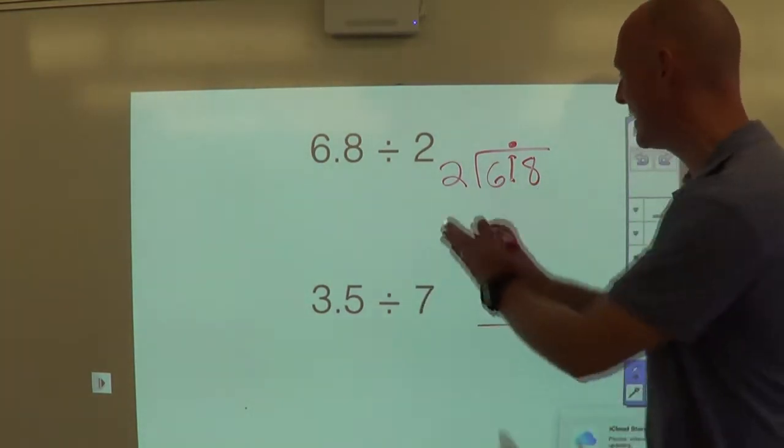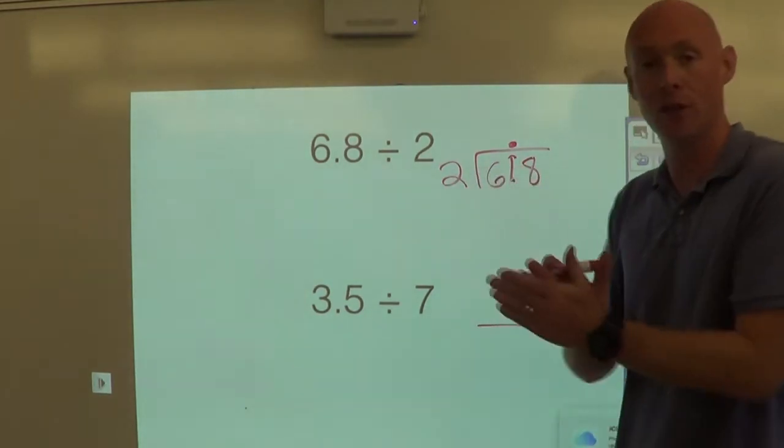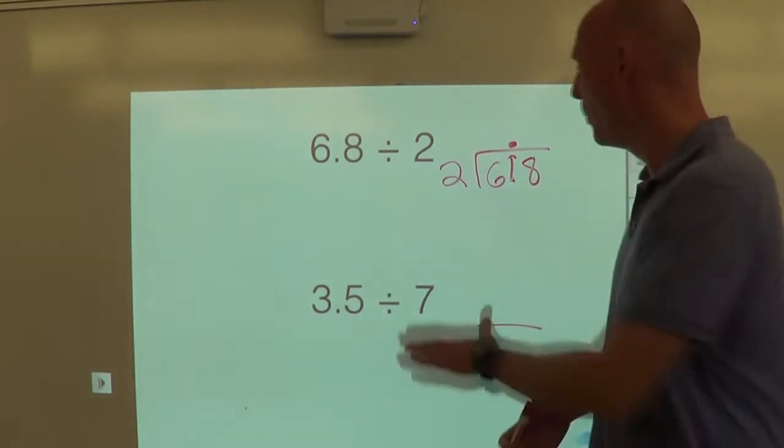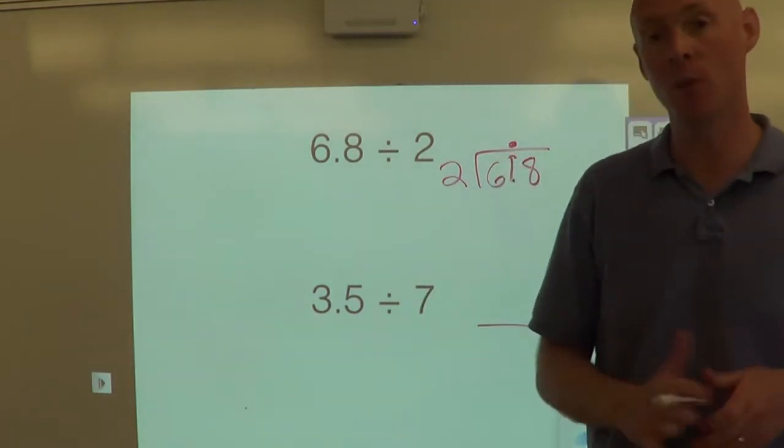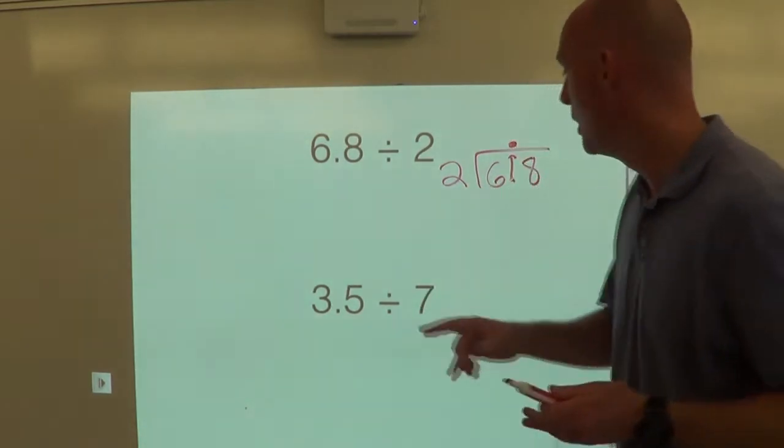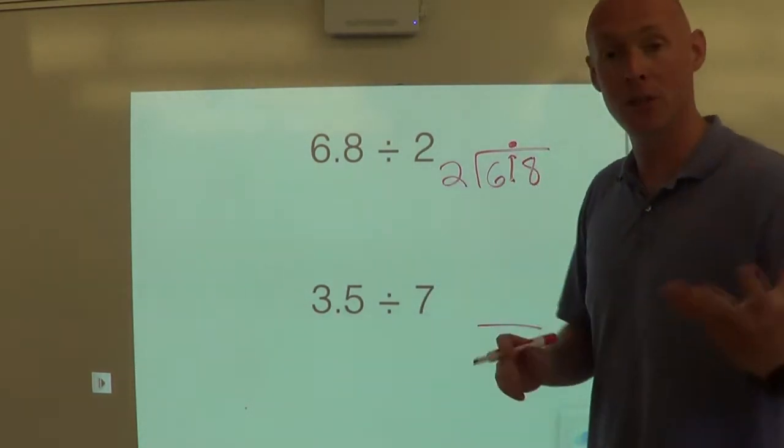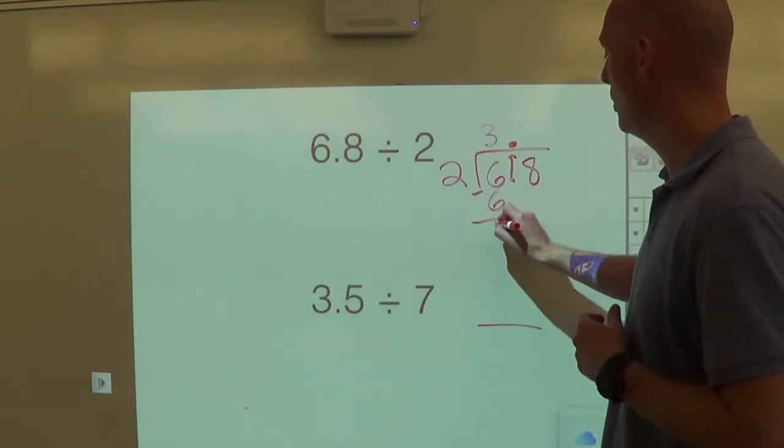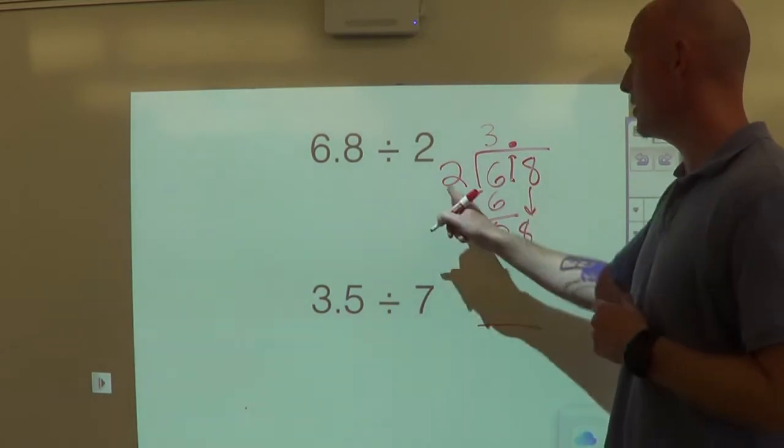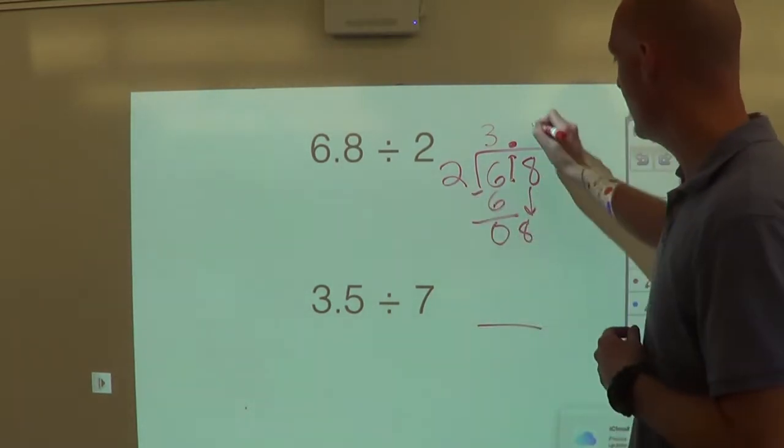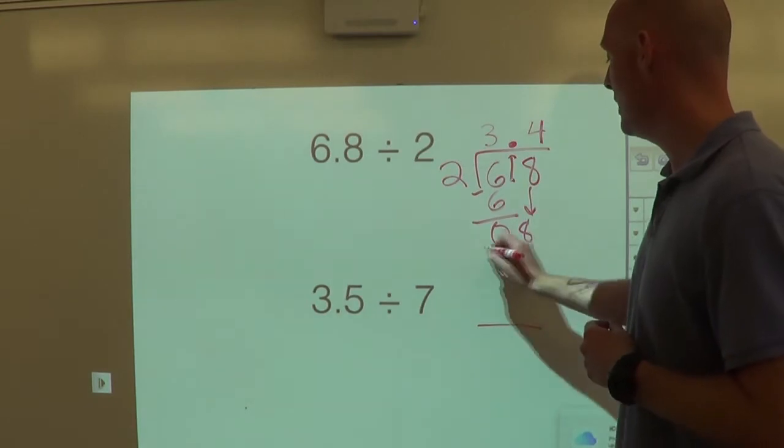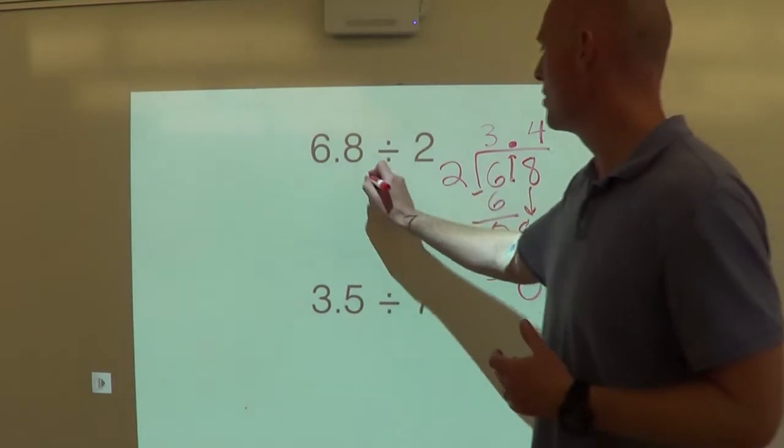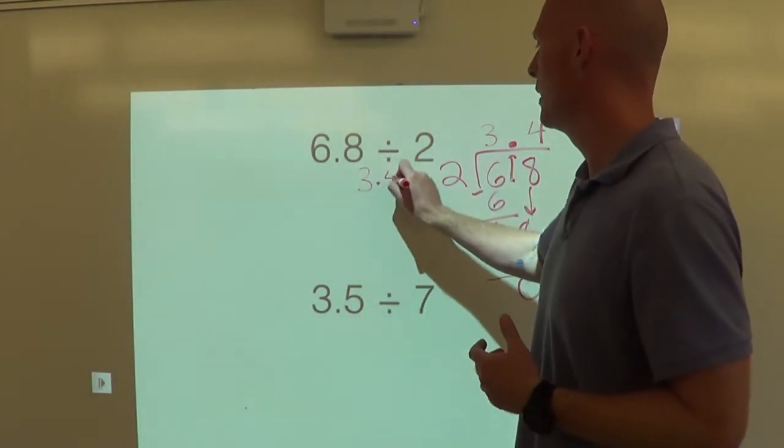What that means is, instead of saying how many times does 2 go into 6.8, we can look at it as how many times does 2 go into 68. We can essentially ignore that decimal because we've already brought it up into our quotient. So, how many times does 2 go into 6? The answer would be 3 times. 3 times 2 is 6. Bring down your 8. 2 goes into 8 four times. 2 times 4 is 8. Subtract zero. Excellent. So now we have our answer is going to be 3.4.